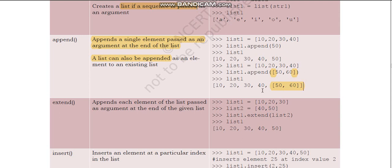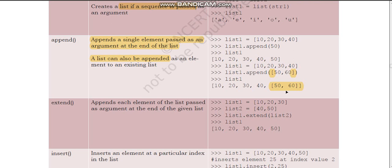The result is [10, 20, 30, 40, [50, 60]] — a list within a list, which is a nested list. 50 and 60 are not taken as individual elements but as a nested list. The syntax is list1.append(value). If the list name were l1, you would write l1.append(). The name used in the syntax matches the list variable name.